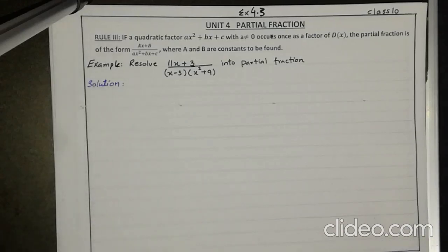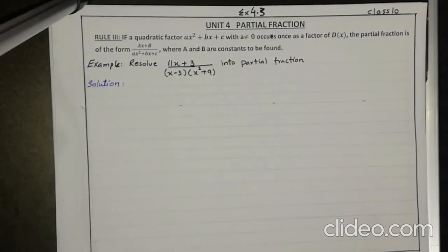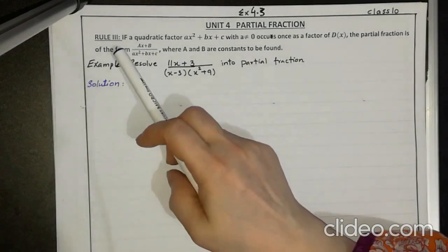Assalamu alaikum dear students. In your previous video you learned about the definition of partial fractions, and you studied Rule 1 and Rule 2. As you know, algebraic fractions have four types in this chapter. Rule 1 was when you have a non-repeated linear factor in the denominator, and Rule 2 was when you have a repeated linear factor in the denominator.